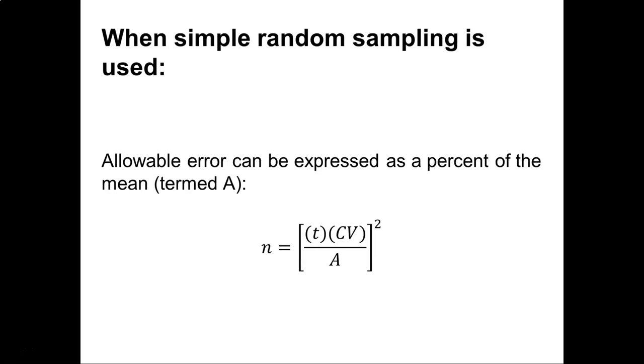When we use simple random sampling, we need to set some kind of allowable error. That is to say, the allowable error can be denoted as A and it's expressed as a percent of the mean. That is, I'm going to set my allowable error to 5%. I want to be within plus or minus 5% of the mean. And so this here, what you're seeing, is the formula for our sample size.